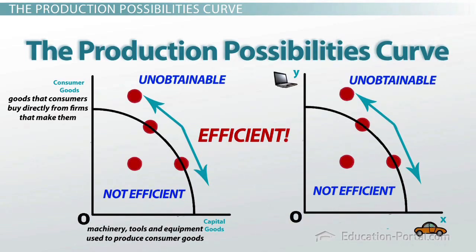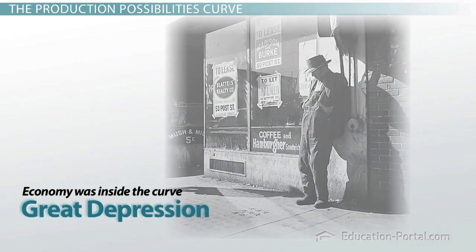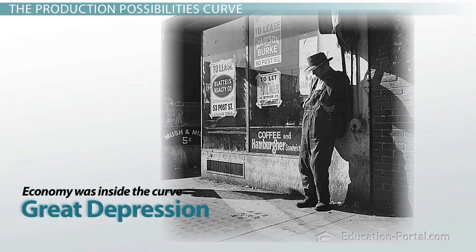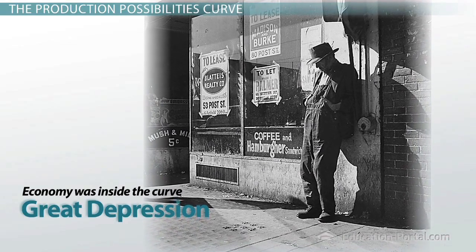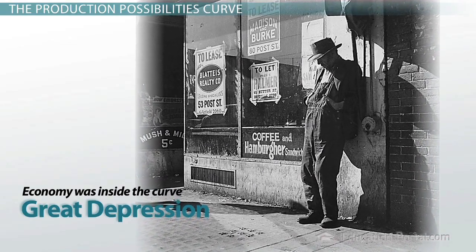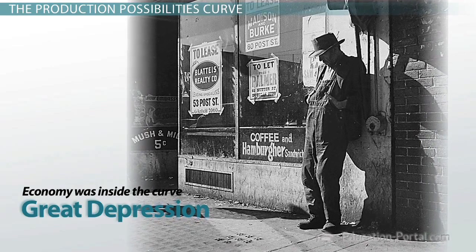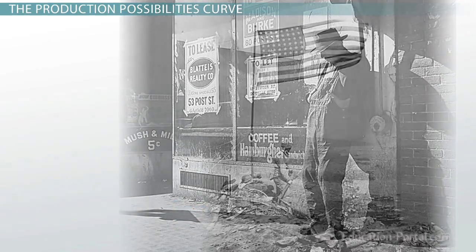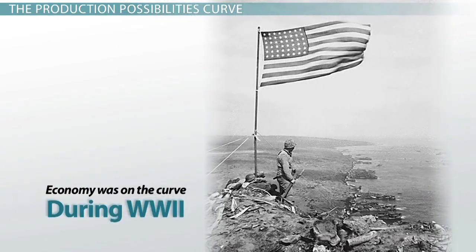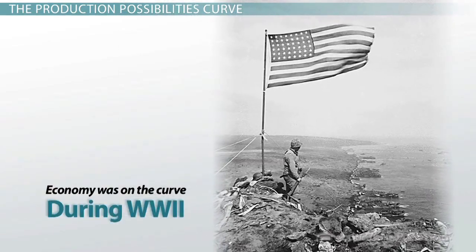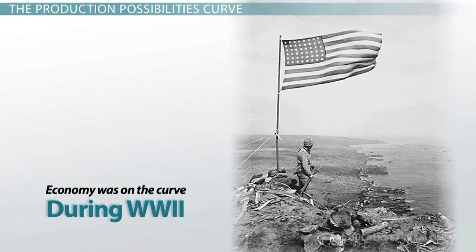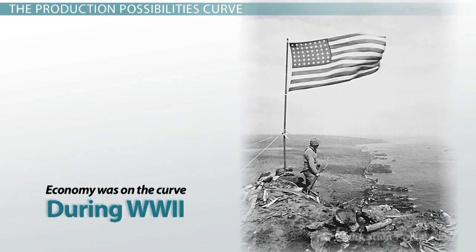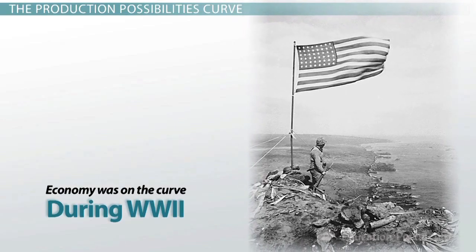The best example in history of when America's economy was inside the curve was during the Great Depression. At that time, unemployment was extremely high and production was extremely low. But eventually, during World War II, our economy moved from inside the curve to somewhere on the curve — we were producing things as fast as we can, largely driven by the war, but we were on the curve.